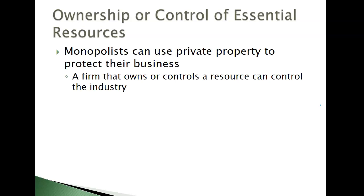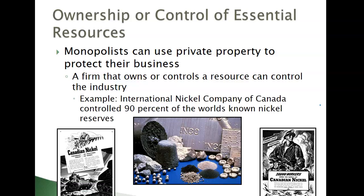It could also be that the monopolist simply owns and controls the resource. For example, the International Nickel Company of Canada back in the day had 90% of the world's known nickel in its reserves. They simply owned the resource and therefore were in control of it.